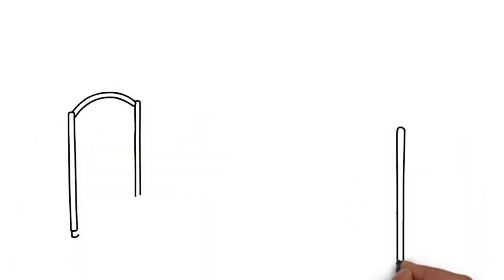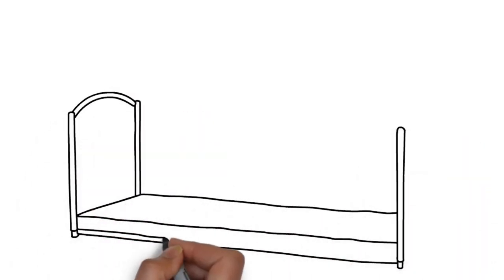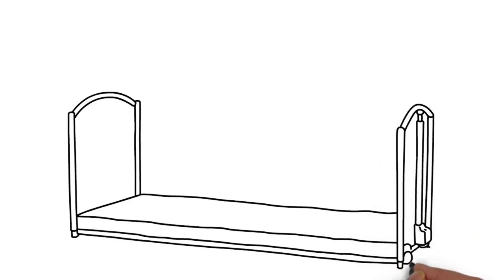The new floor bed lowers to just 7 centimetres off the floor, so if a user does fall out of bed it's more of a roll.